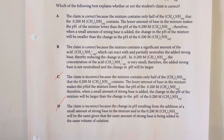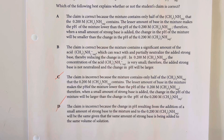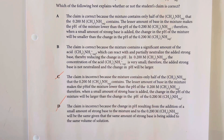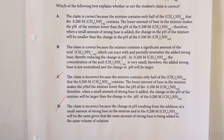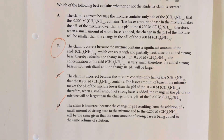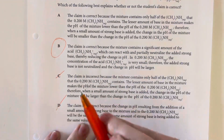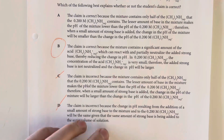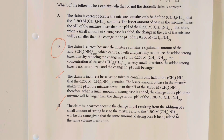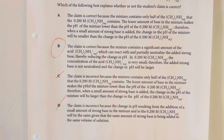Option B says the claim is correct because the mixture contains significant amounts of the dimethylammonium acid, which can be partially neutralized by adding a strong base, thereby reducing the pH. In 0.2 molar dimethylamine alone, the concentration of the acid is very small; therefore the added strong base is not neutralized and the pH would change more. This is my best answer choice because we are mentioning that the conjugate acid ion is already present in solution, able to reconstitute the original dimethylamine and act as a buffer, preventing large swings in pH.